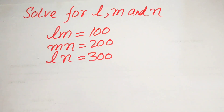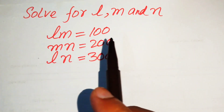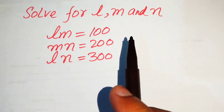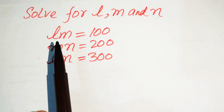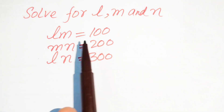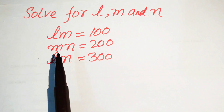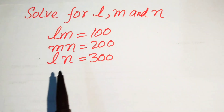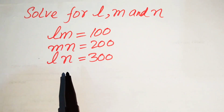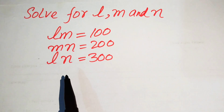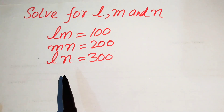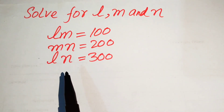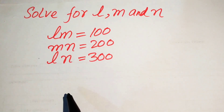Hello everyone, welcome. We are going to solve this problem for the values of L, M and N. We have L·M equals 100, M·N equals 200, and L·N equals 300, and we solve this problem for the values of L, M and N.